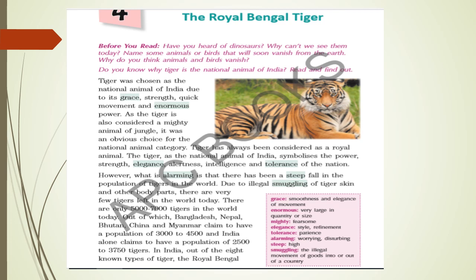However, what is alarming is that there has been a steep fall in the population of tigers in the world, not only in India. The population of tigers is decreasing day by day. This is due to illegal smuggling — that is, taking out the tiger's skin and other body parts for other purposes — leaving very few tigers in the world today.